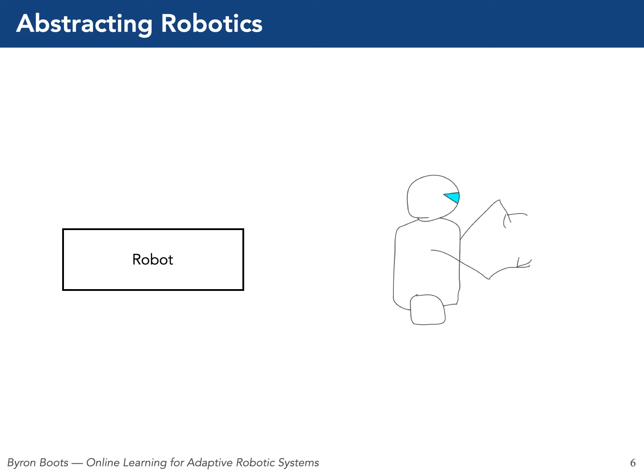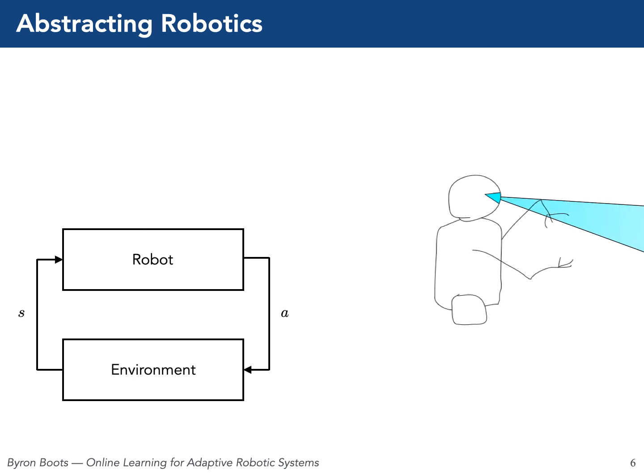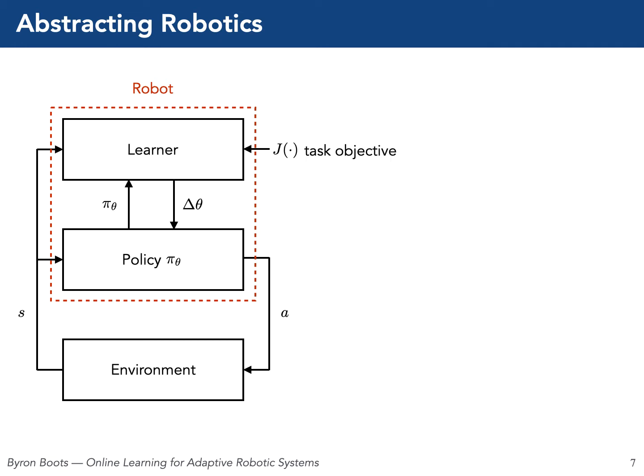Let's start by thinking abstractly about what a robot is. Usually we can assume that the robot can perceive the environment and take an action which changes its relation to the environment. For robots that adapt their behavior with experience, we need to break this down further. We usually call the function that takes states or observations as input and produces actions as output a policy, and the policy itself has parameters — theta. If the parameters stay the same then the robot's behavior stays the same. But we may want robots which can learn from their mistakes and handle complex dynamic environments. In this case we can specify a learner that updates the policy parameters to improve at some task with experience. The task objective function tells us how good the policy is and guides the learner.